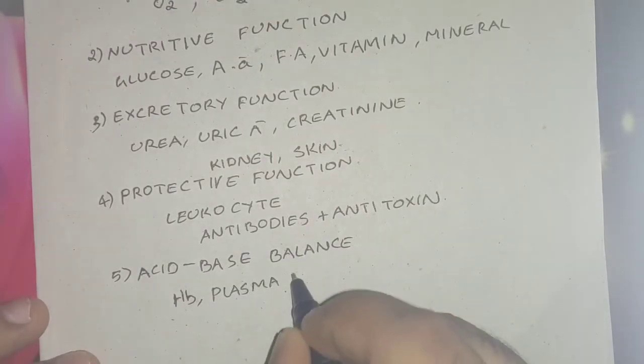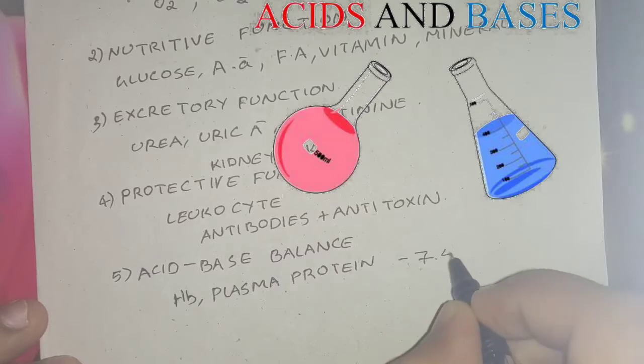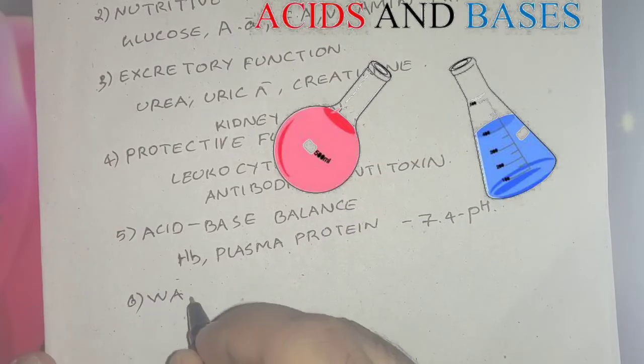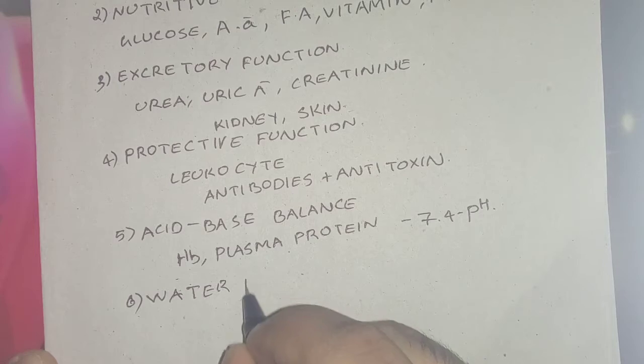Next one is the acid-base balance. Hemoglobin, plasma proteins, etc. maintain the pH of the body at 7.4.